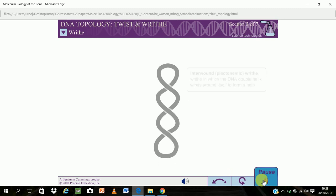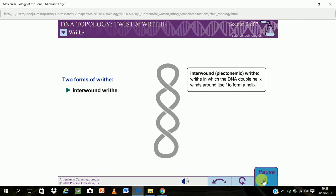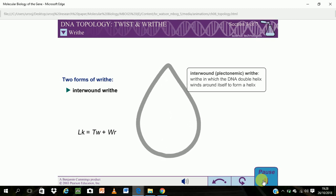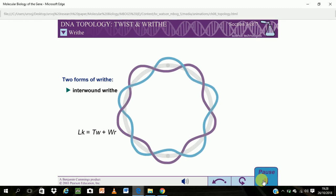Writhe can take two forms. One form is interwound or plectonemic writhe. In interwound writhe, the DNA is wound around itself, forming a helix. Most CCC DNA molecules exhibit interwound writhe.